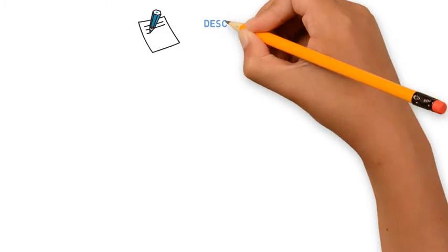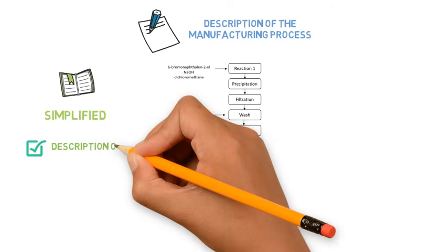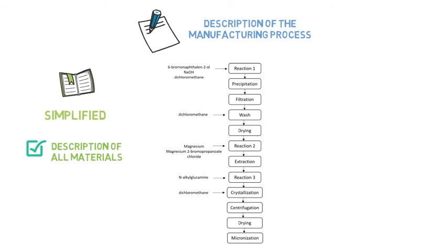All structures must be part of the diagram displayed in the Applicant Part. And we also need to see a description of the manufacturing process and a flowchart with the unit operations which are performed. In the Applicant Part, this description and flowchart are simplified, but all materials which are introduced need to be described, so that the drug product manufacturer can evaluate all potential impurities.